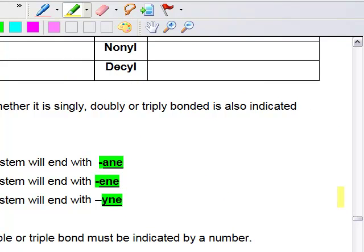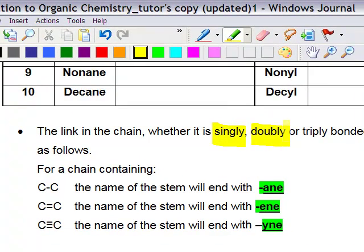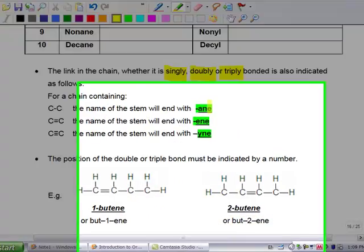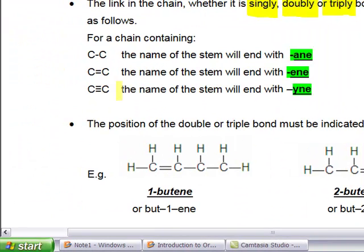Moving on, let us look at the linkage in the chain. The linkage in the chain could be single, double, or triple. It is also indicated as follows: a C single bond is known as -ane, a C double bond is known as -ene, and a C triple bond is known as -yne. Please remember the naming as well.